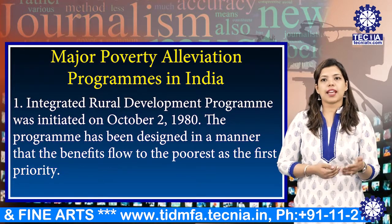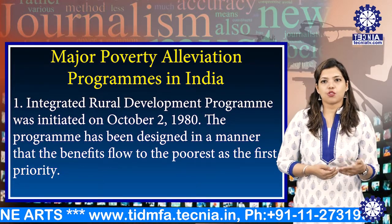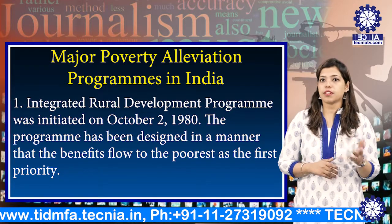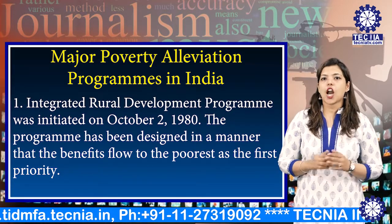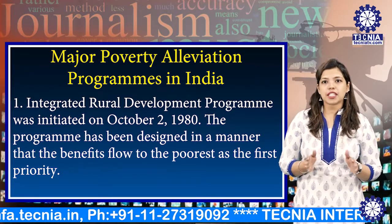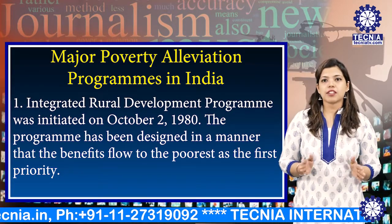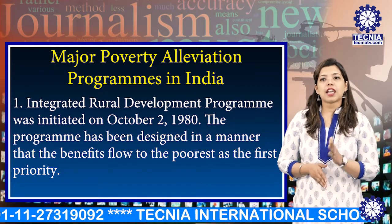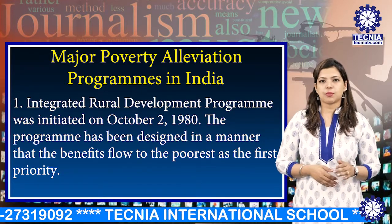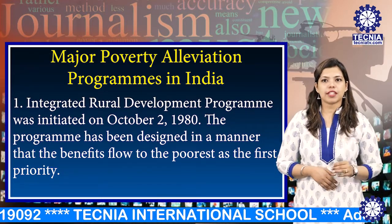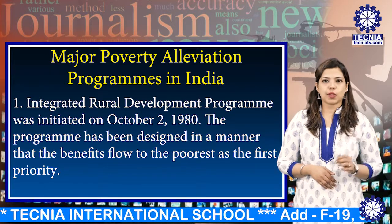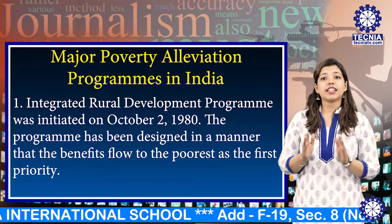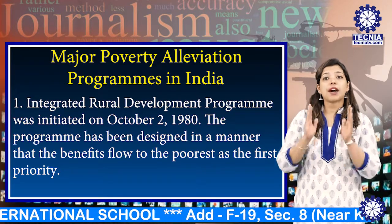The program has set out to generate income of Rs. 2000 per family. However, mid-term appraisal of the 9th plan revealed that the average investment per family remained too inadequate to generate the target income per family.